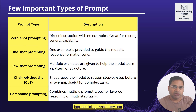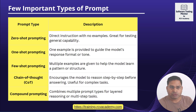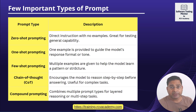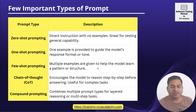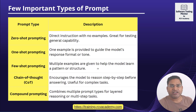Few-shot prompting is wherein you give multiple examples to the LLM to show the pattern, so your LLM will be able to learn the pattern from your examples and provide answers accordingly. Then you have chain of thought prompting, wherein you encourage the model to reason step by step.